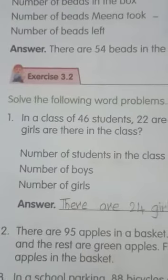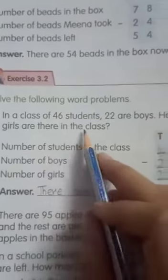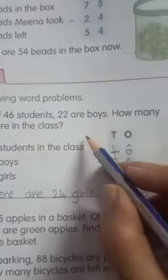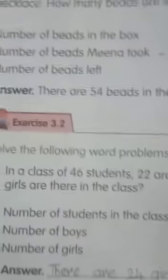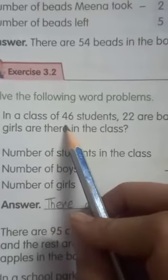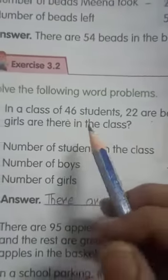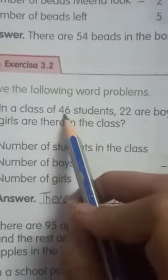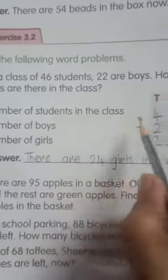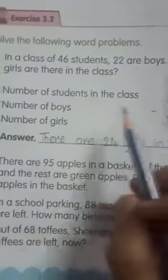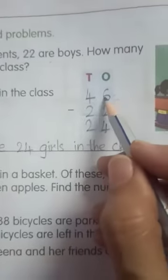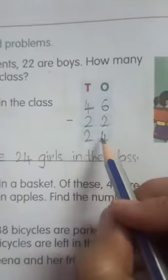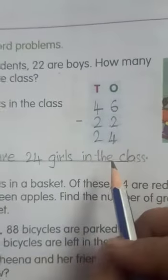Let's do one here. In a class of 46 students, 22 are boys. How many girls are there in the class? Children, there are 46 students in the class. From those 22 are boys. You have to find the number of girls in the class. If you subtract number of boys from total students, you will get the girls. So number of students in the class, 46. Number of boys, 22. Let's subtract 22 from 46. 6 minus 2 is 4, and 4 minus 2 is 2. So there are 24 girls in the class.